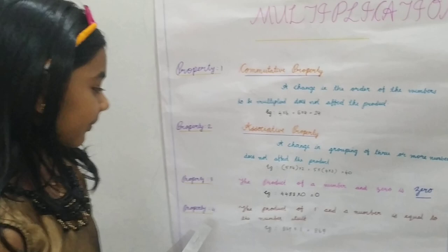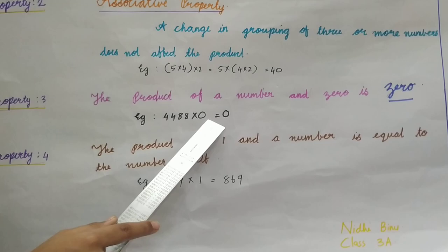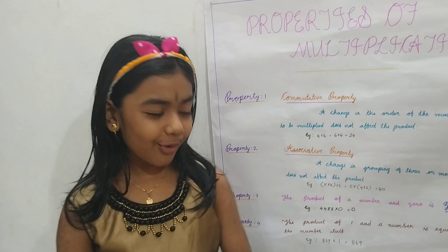Property number 3: The product of a number and 0 is 0. Example: 4488 x 0 is equal to 0. Property number 4.